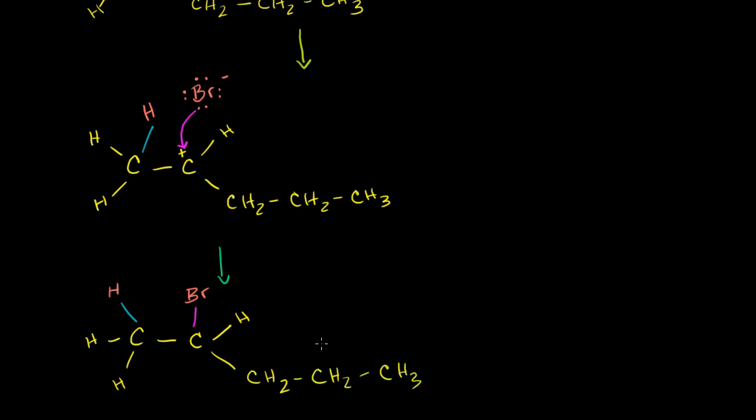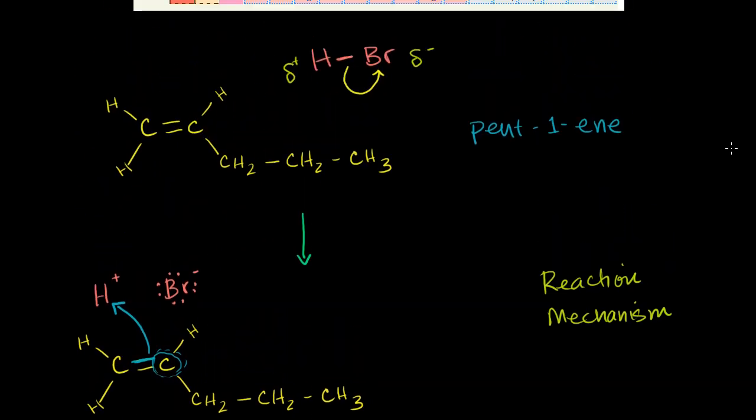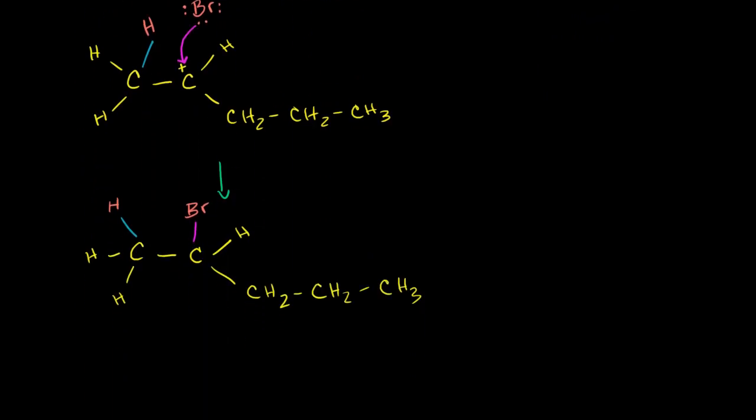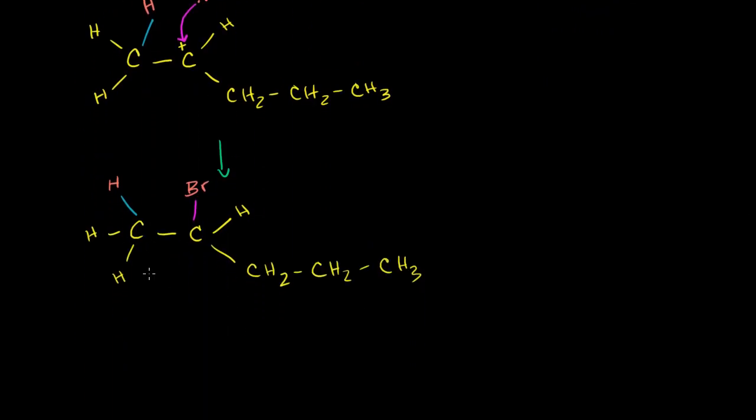So what we just did is we showed a reaction mechanism. We showed a plausible way to start with pent-1-ene and hydrogen bromide and get to, when the two things are mixed together, to get to what is this thing right here? Let's name it just for fun. What is this thing right here? We still have one, two, three, four, five carbons. It's now an alkane. There are no double bonds here, so we're dealing with pentane. So this is pentane. And it has one group on the chain. It has this bromo group right there. We want to start numbering closest to that group. So that's the one, two, three, four, five carbon. So this is 2-bromopentane.